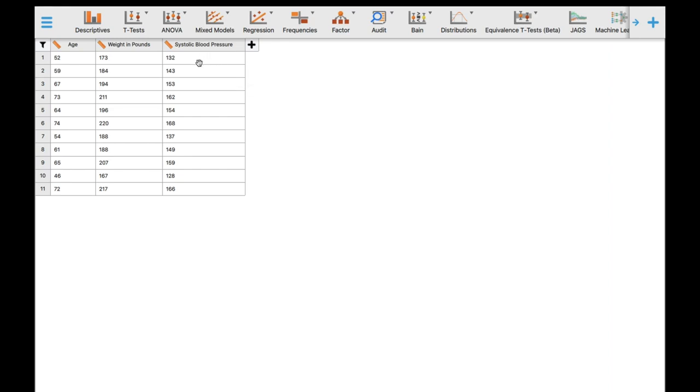Remember, your first, second, and third questions are answerable by using descriptive statistics. And for your fourth question that would ask if age and weight in pounds would significantly influence systolic blood pressure, you need to run using a linear regression.